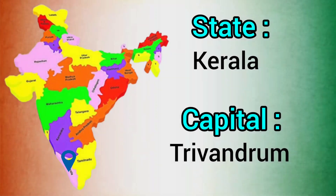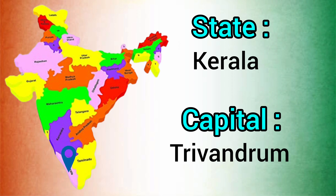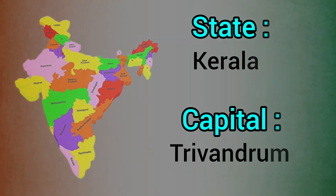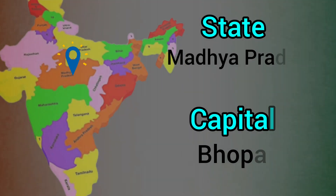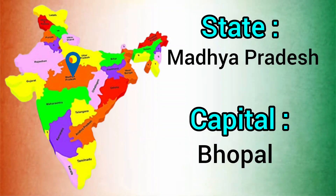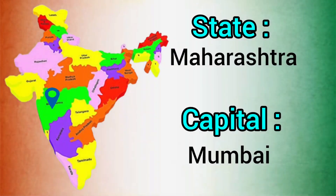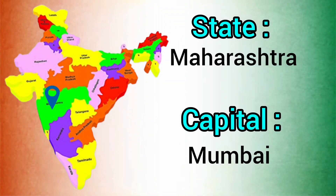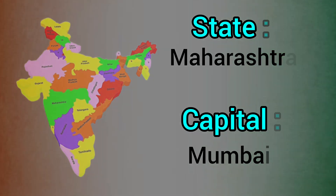State: Kerala. Capital: Thiruvananthapuram. State: Madhya Pradesh. Capital: Bhopal. State: Maharashtra. Capital: Mumbai.